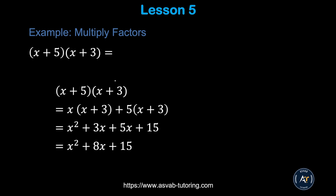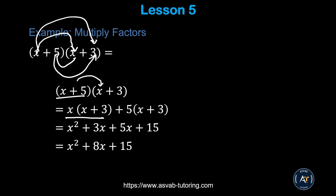Now we'll learn how to multiply factors. If you want to multiply factors, you have to distribute each term: this times that, this times that, this with that, and that with that. Multiply x times x to get x², then 3 times x is 3x, x times 5 is 5x, and 5 times 3 is 15. Now simplify by combining like terms: you have x², and 3x plus 5x gives you 8x because they are like terms with the same sign, so you add them. So the answer is x² + 8x + 15.